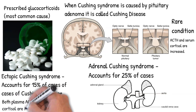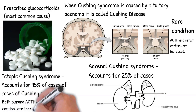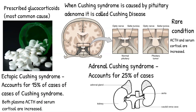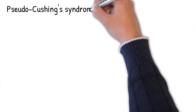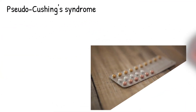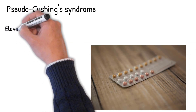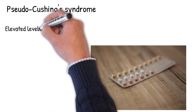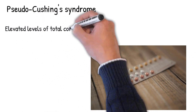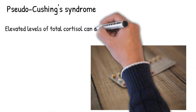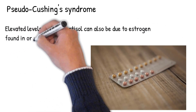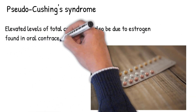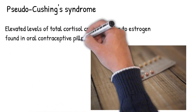In ectopic Cushing's syndrome, both plasma ACTH and serum cortisol are increased. Pseudo-Cushing's syndrome involves elevated levels of total cortisol due to estrogen found in oral contraceptive pills containing a mixture of estrogen and progesterone. Pseudo-Cushing's syndrome patients display the signs, symptoms, and abnormal hormone levels seen in Cushing's syndrome.